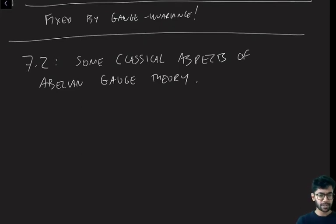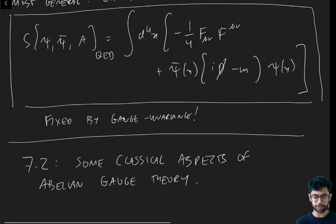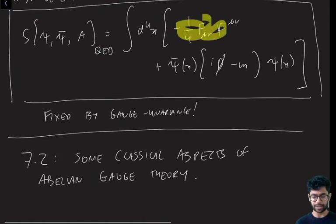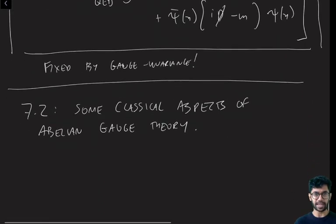So now that we understand what gauge theory is, I want to discuss some classical aspects of Abelian gauge theory. In particular, I'm going to focus on only the first part of the action given above, just the part involving the A field alone.